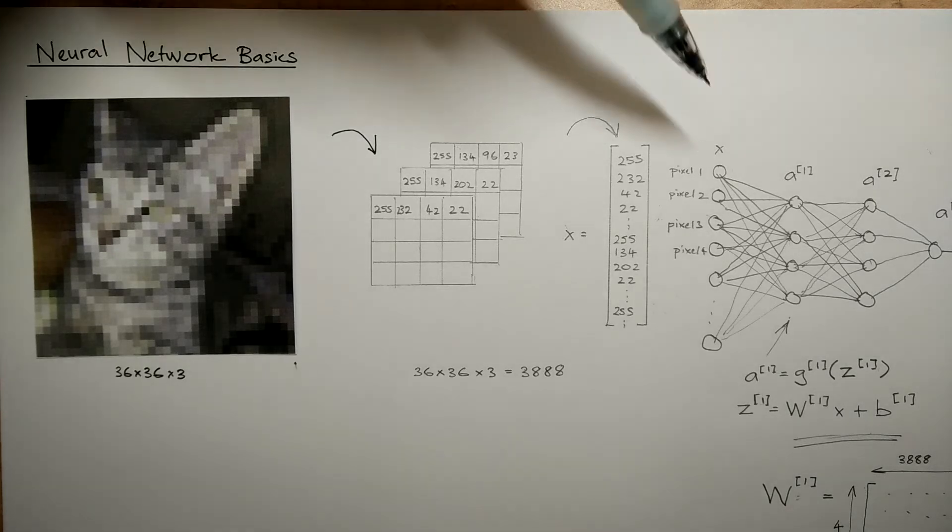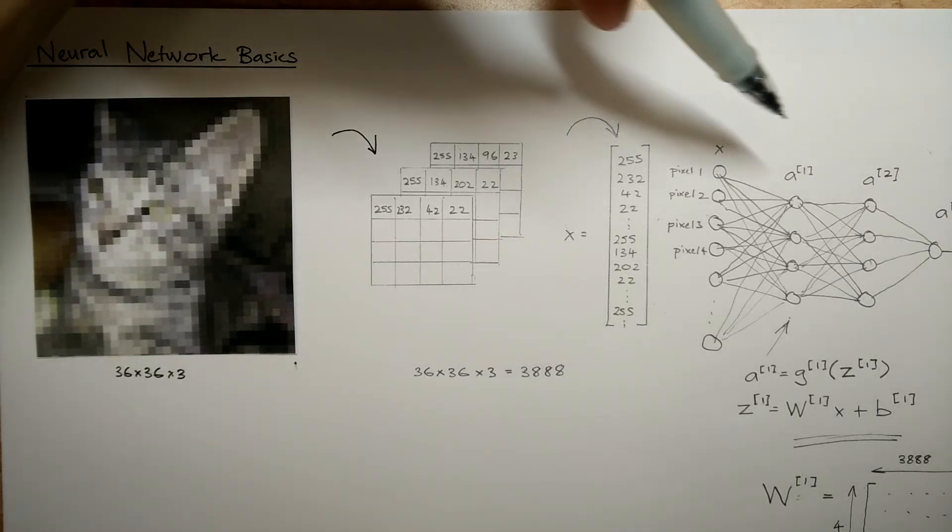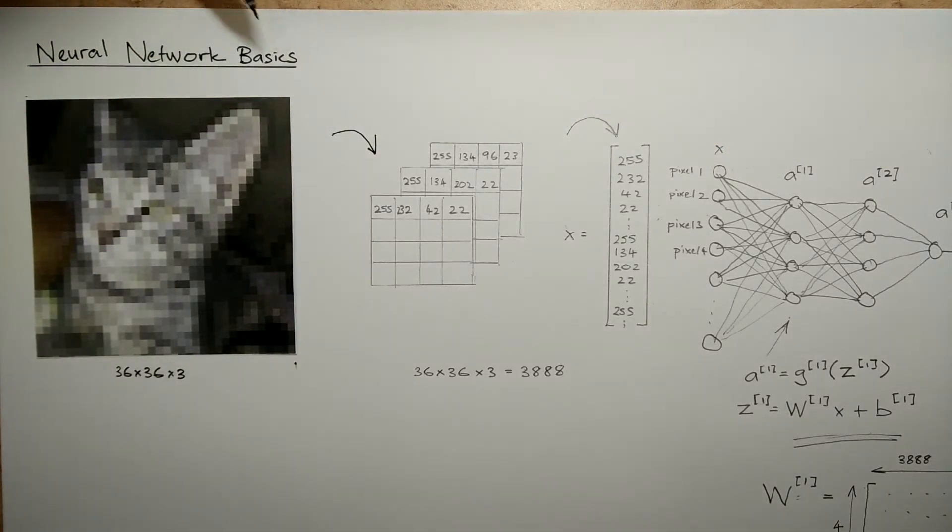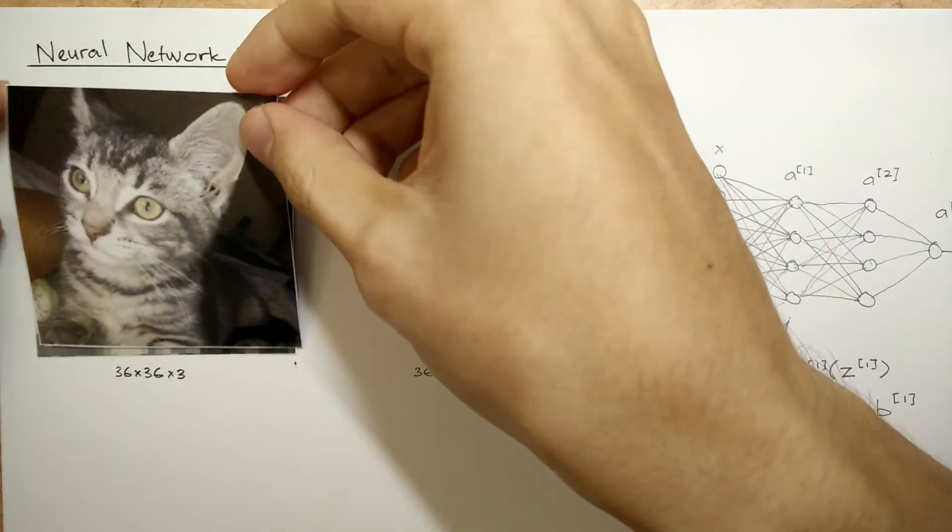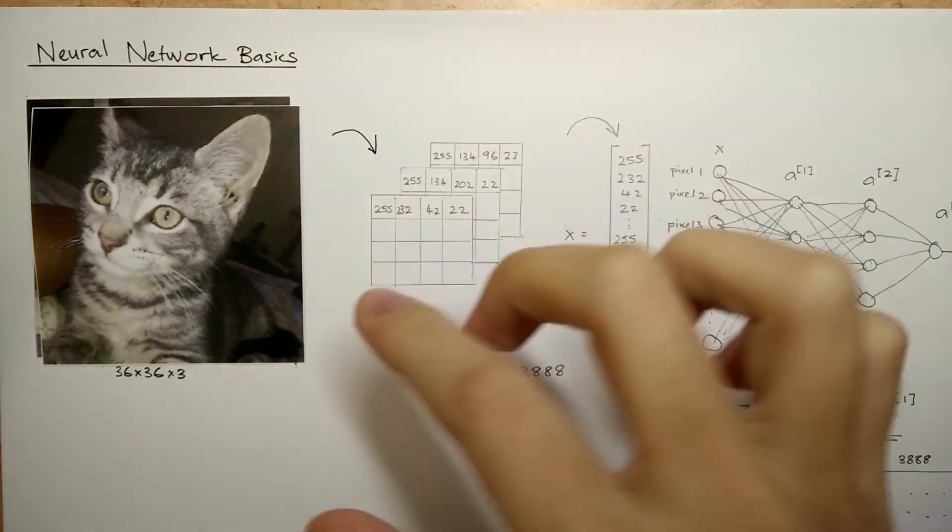Now this is all well and good. In fact, a fully connected two-layer neural network like this can get really good at classifying cat images, but for advanced computer vision problems we don't just want to deal with 36x36x3 images, we want to deal with 1000x1000x3 images or more.